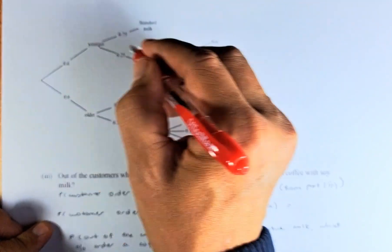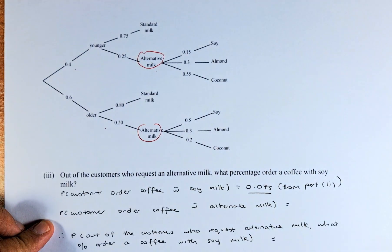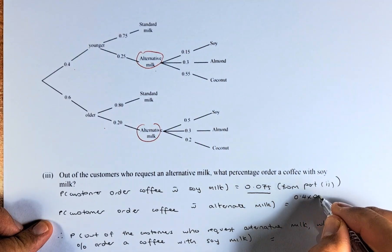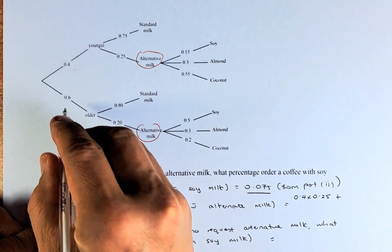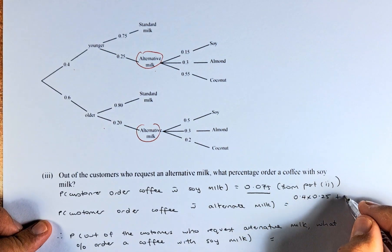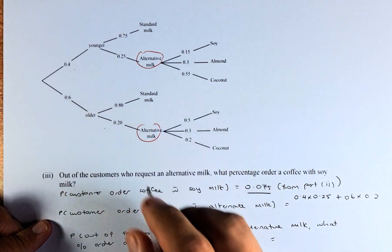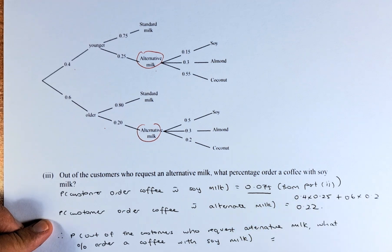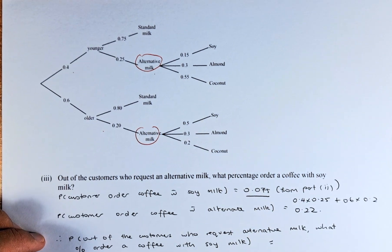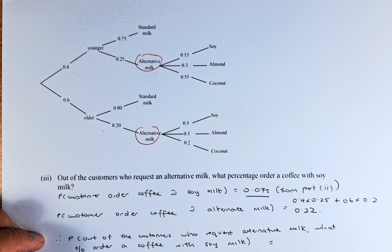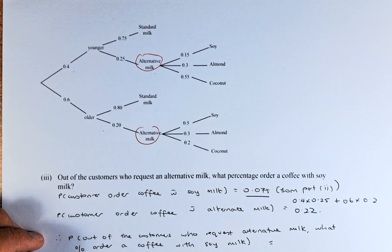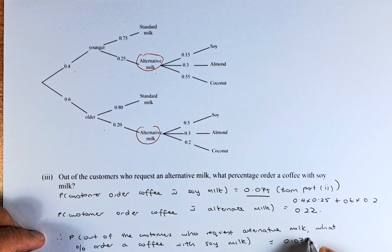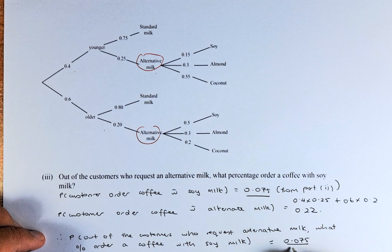Now we need to calculate customer who order coffee with alternative milk. So we are going to add them first. So it's going to be 0.4 times 0.25 and then we're going to add 0.6 times 0.2. Put your calculator and the answer is going to be 0.22. So to answer the question, therefore the probability out of the customer who requested alternate milk, what percentage order a coffee with soy milk? We're going to take this number here, 0.075 and divide by 0.22.